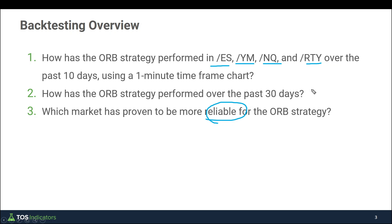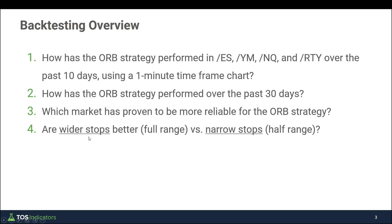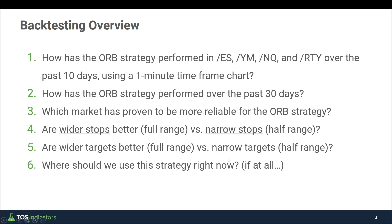My guess is there are a handful of markets where the strategy has worked better in this high volatility period. Once we identify that, we'll start to test a few different permutations — things like wider stops versus narrow stops, same idea with targets. That should give us a final answer of where to use the strategy, what permutations are working best, and what will serve your trading style best based on what you're comfortable with. With that, let's move into our charts and start back testing with the S&P 500 first.